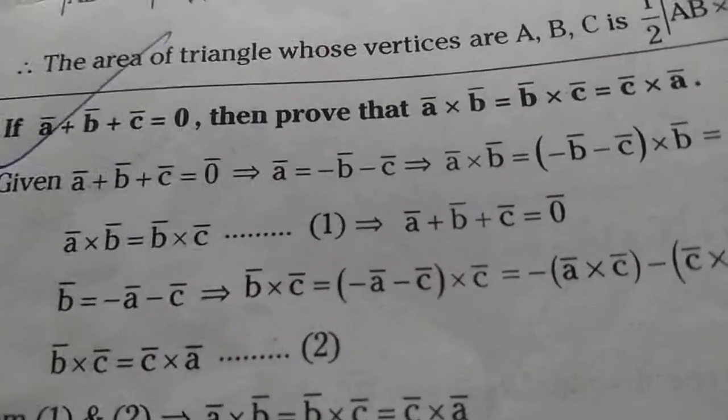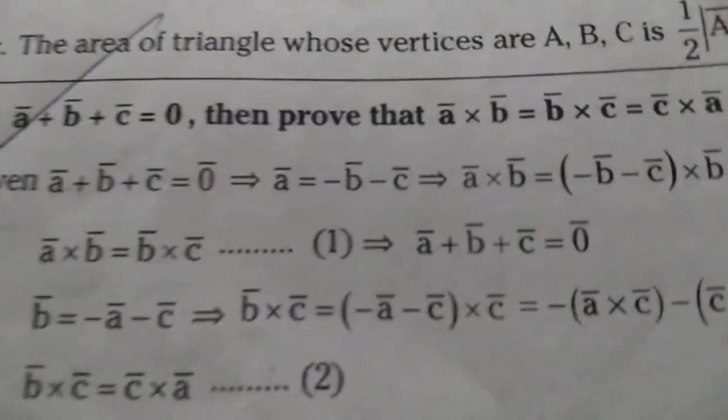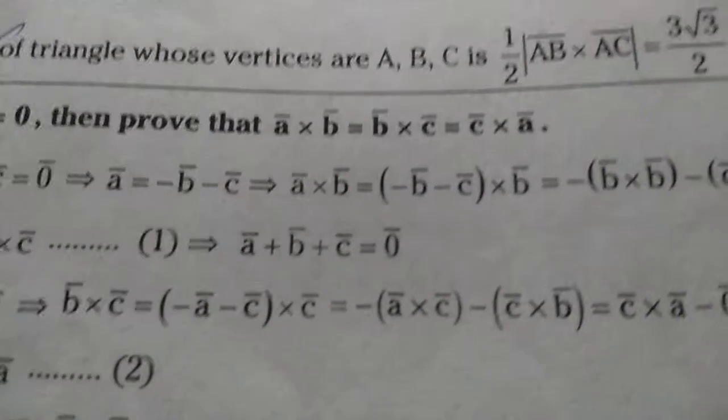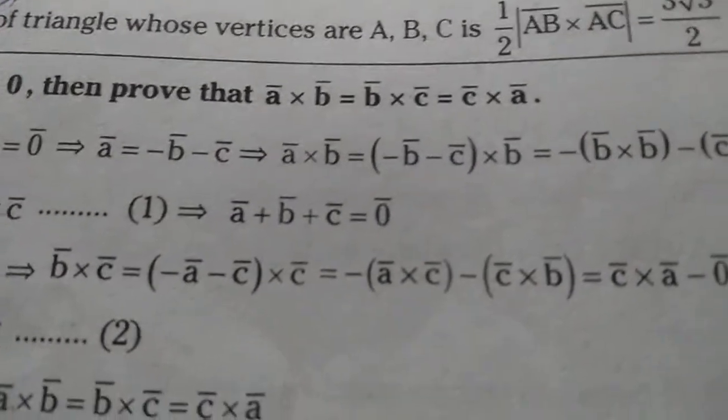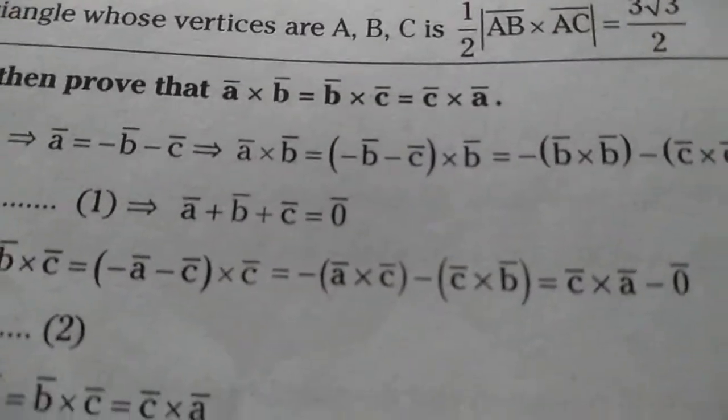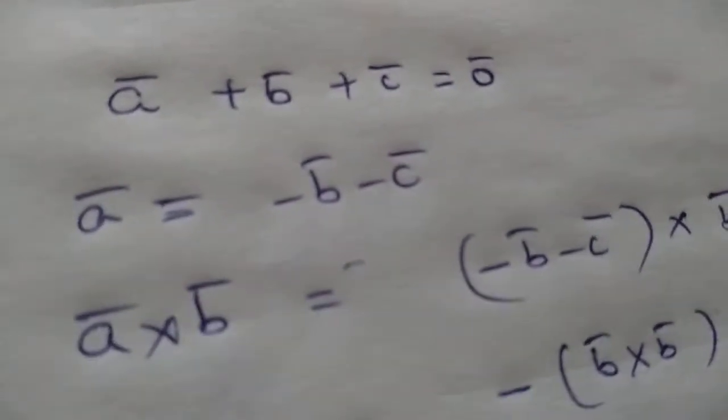The problem: if ā + b̄ + c̄ = 0̄, then prove that ā × b̄ = b̄ × c̄ = c̄ × ā. Given that ā + b̄ + c̄ = 0̄.